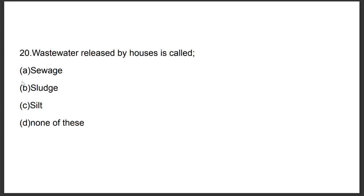Question number twenty: Wastewater released by houses is called — Option A: Sullage, Option B: Sludge, Option C: Slate, Option D: None of these. The answer is Option A, sullage. With this we have come to the end of this video. I hope this video is going to be helpful for your upcoming nursing exam. Good luck.